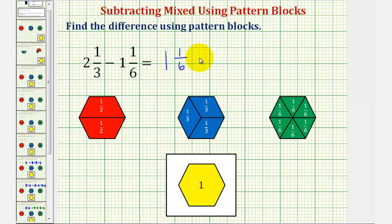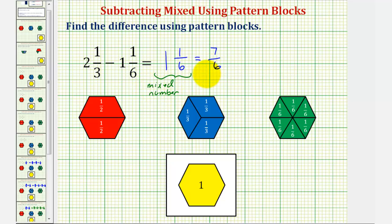One and one-sixth is equivalent to or equal to seven-sixths. Just for some vocabulary, we would call one and one-sixth a mixed number, and we would call seven-sixths an improper fraction. An improper fraction is a fraction in which the numerator is greater than or equal to the denominator. I hope you found this helpful.